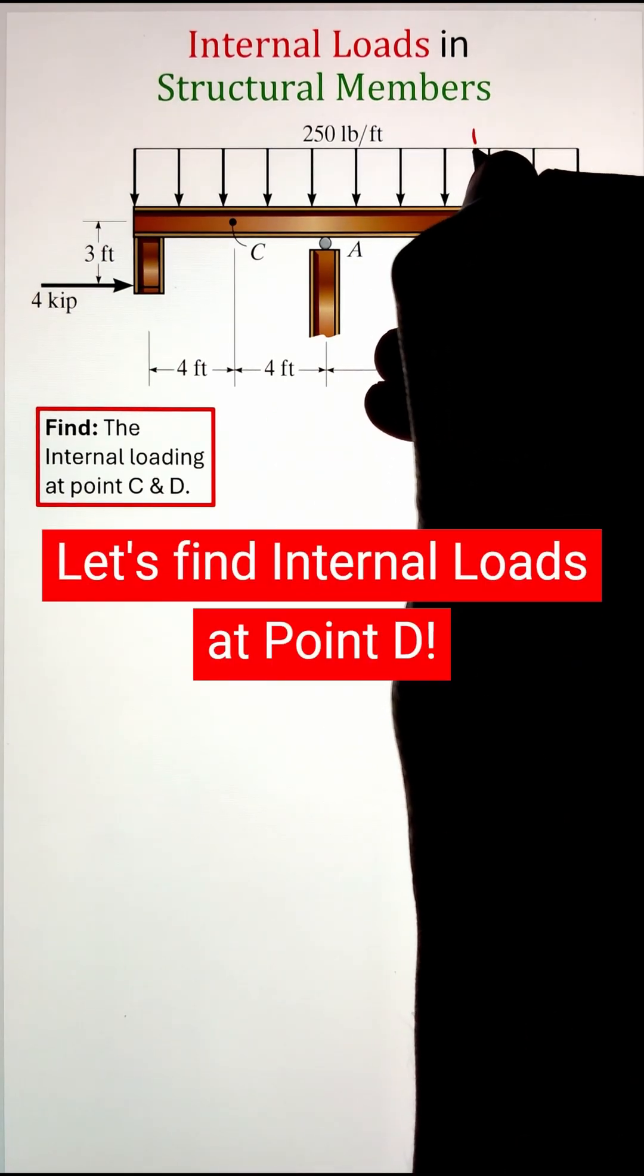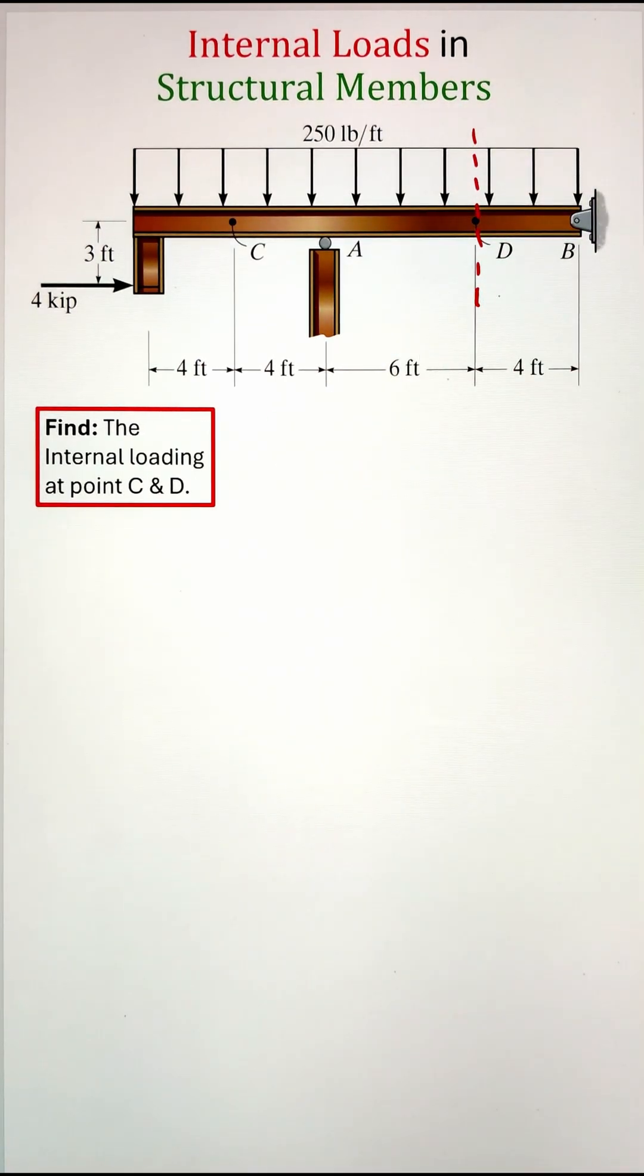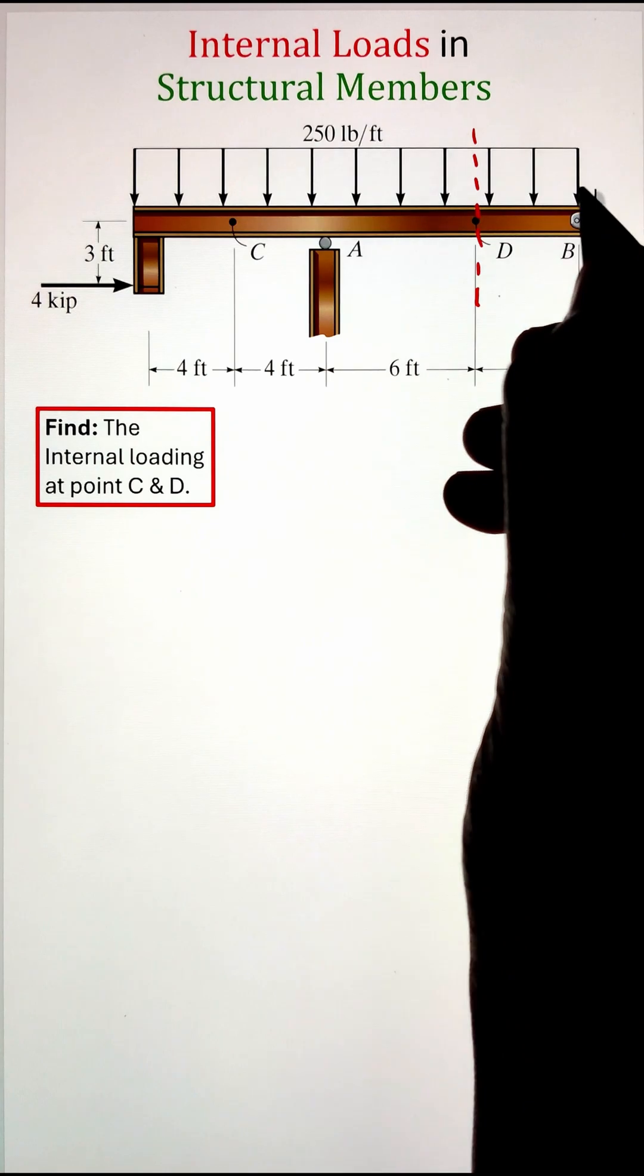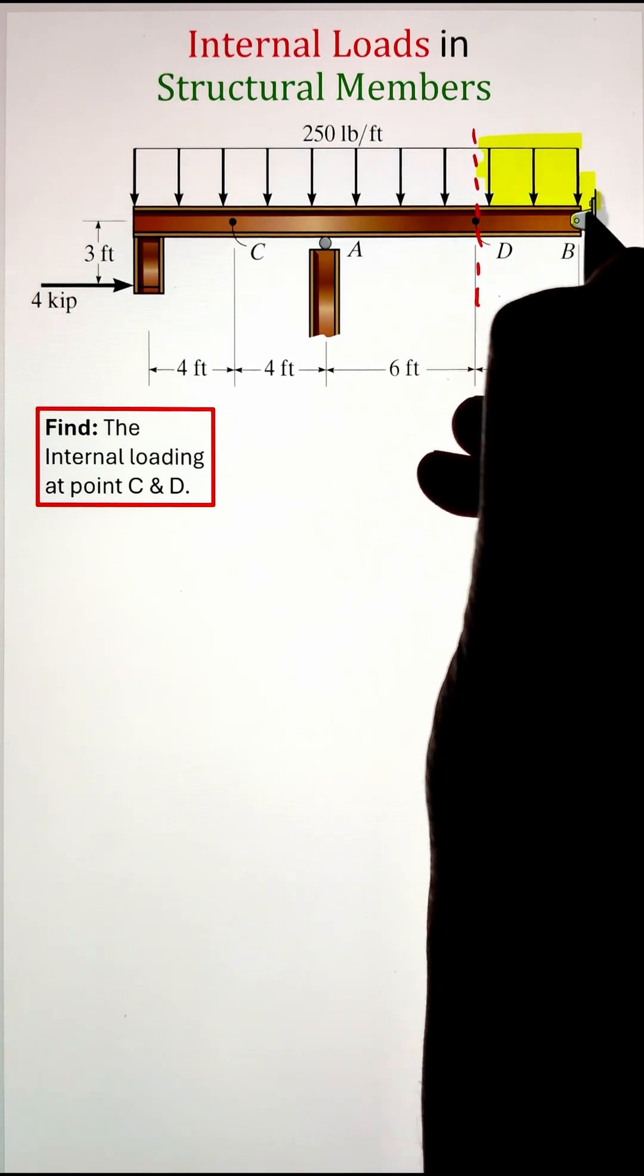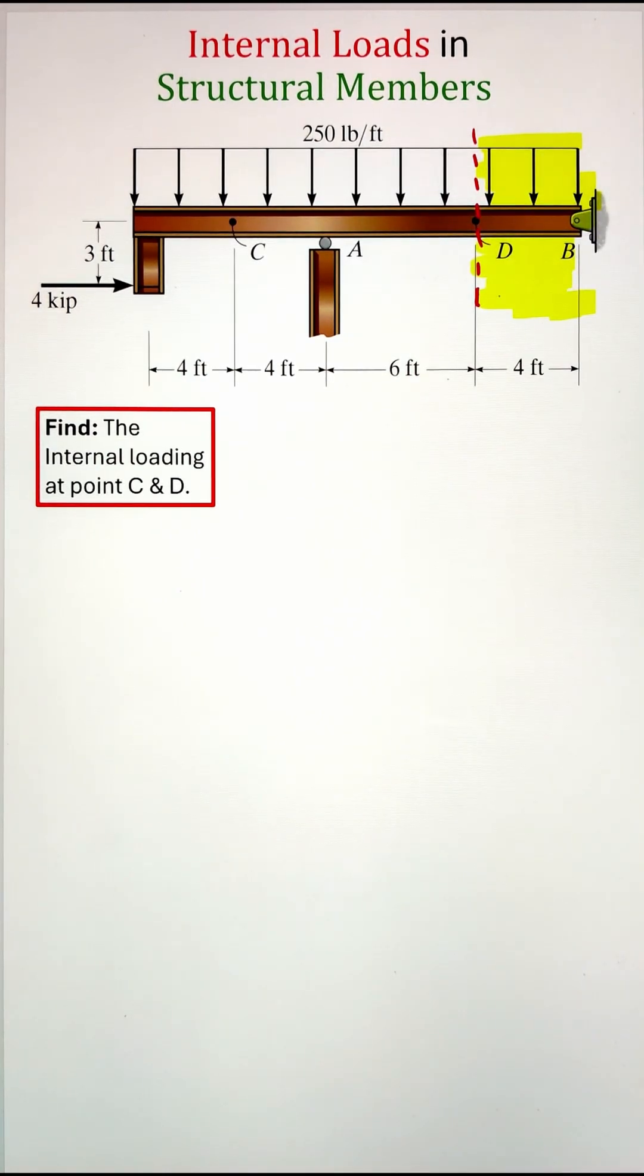In order to find the internal loads at point D on the structural member, what we can do is draw an imaginary line and divide the beam into two halves. Next, we can select any one of the halves to solve for the internal loads.